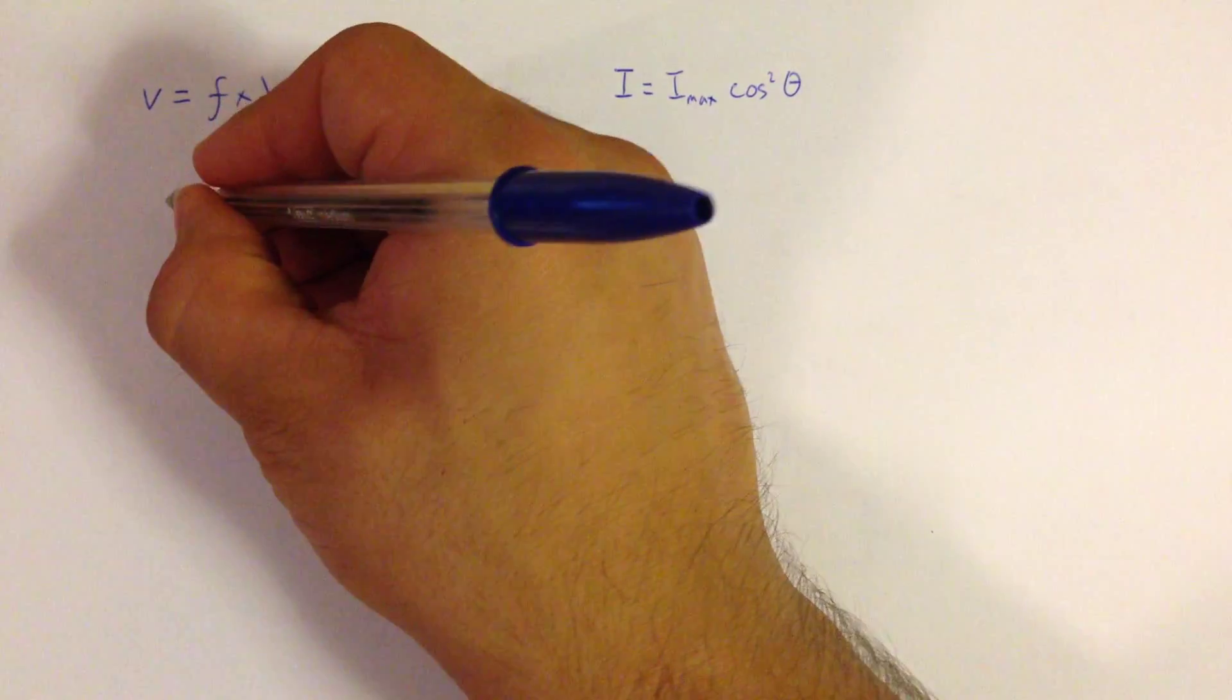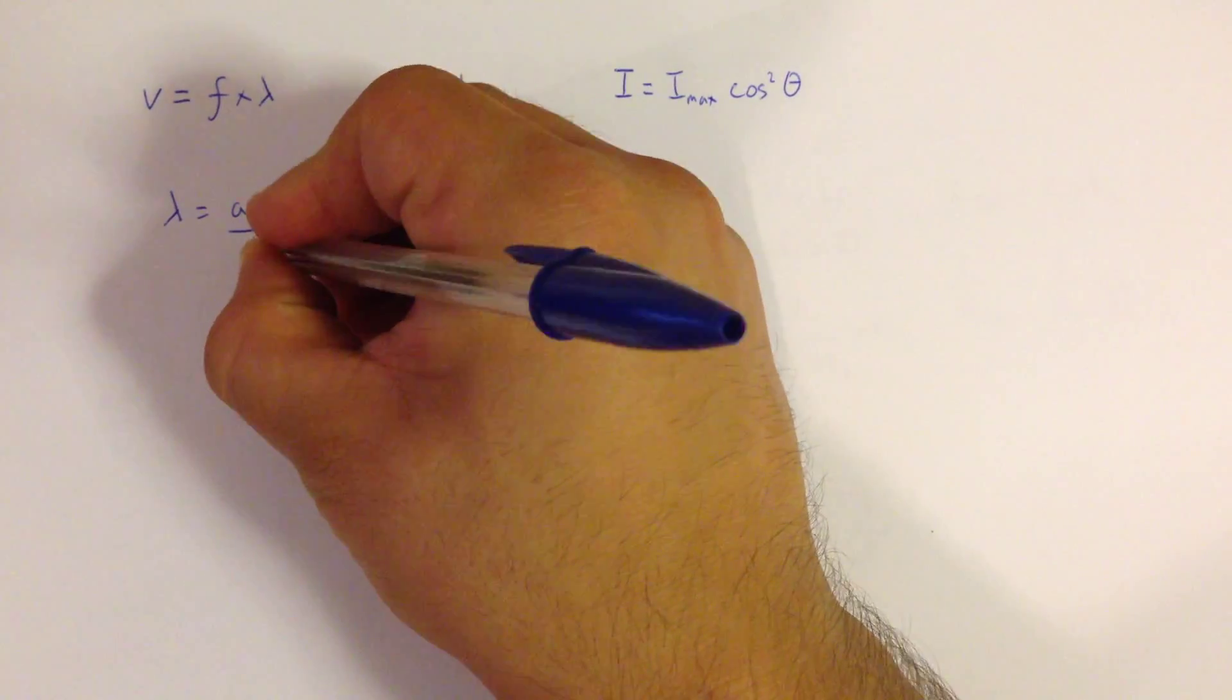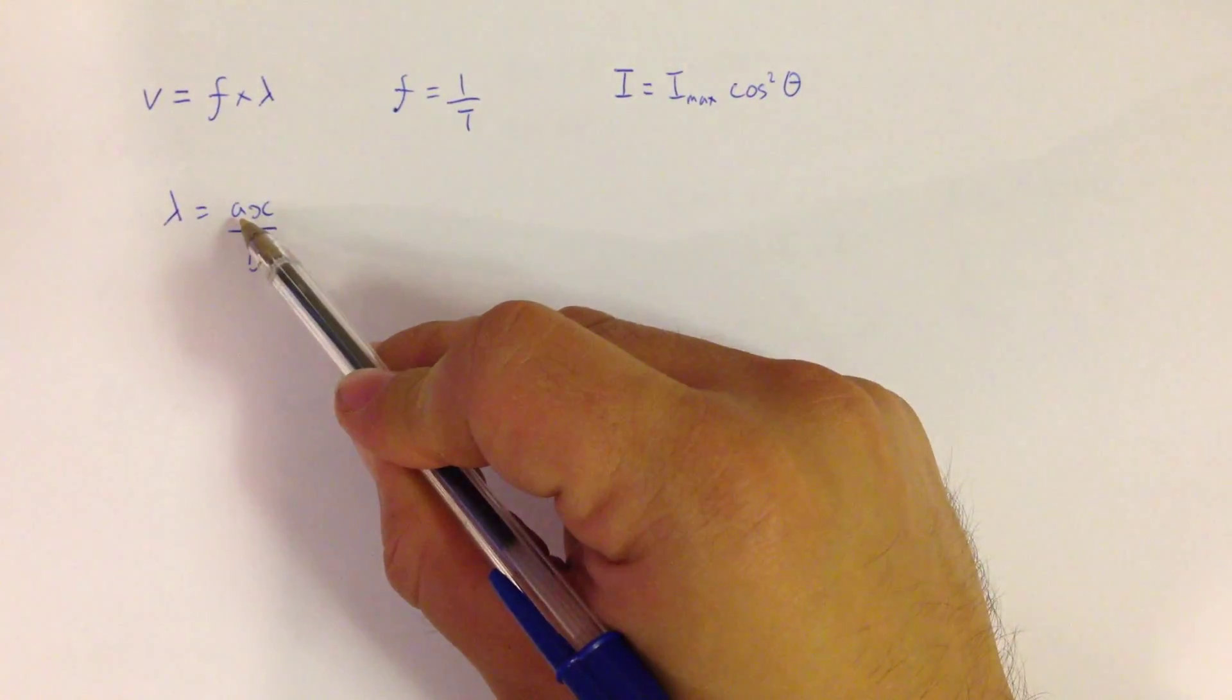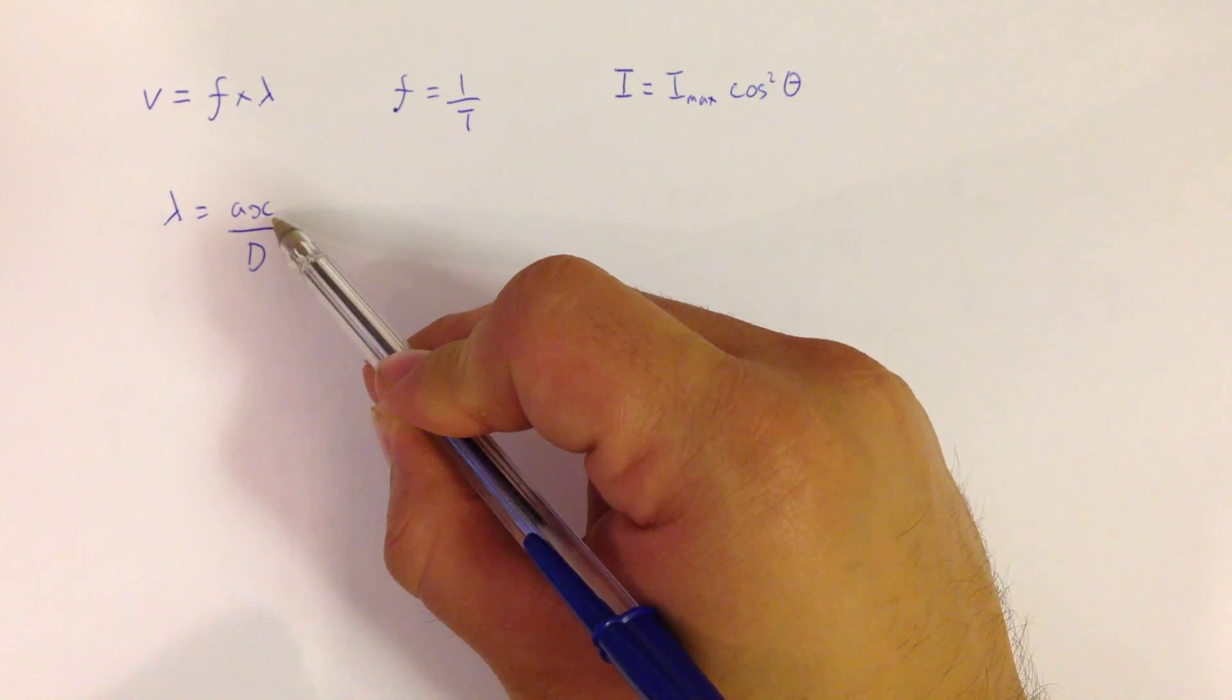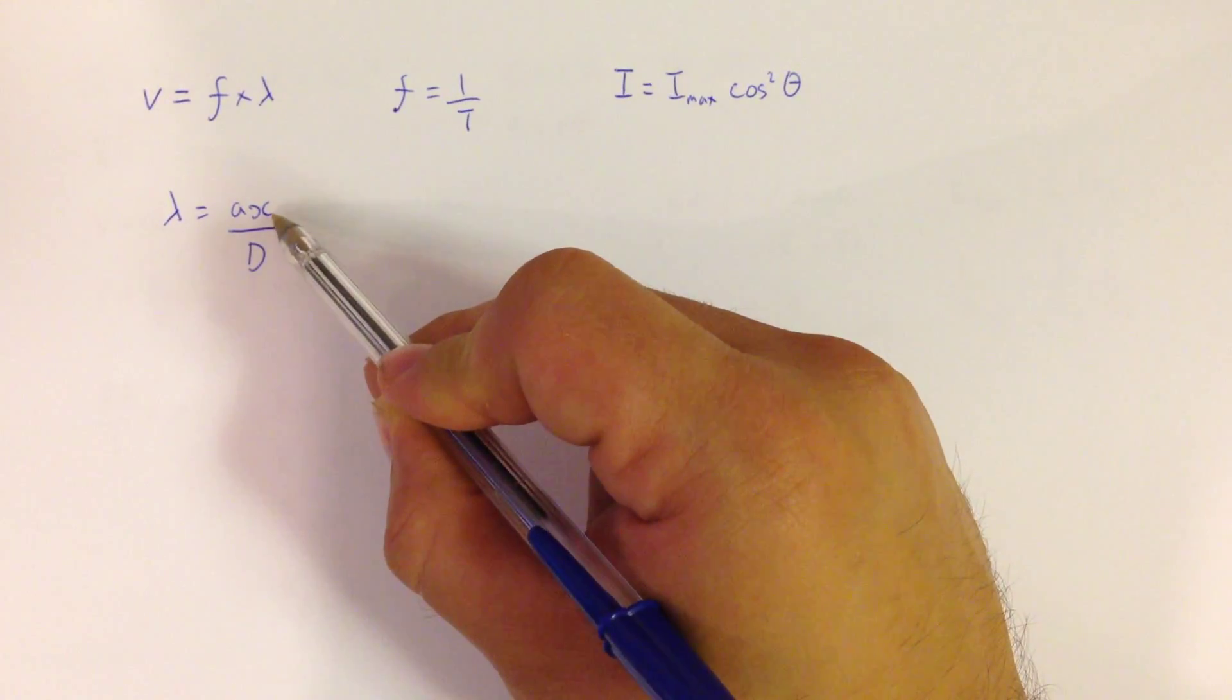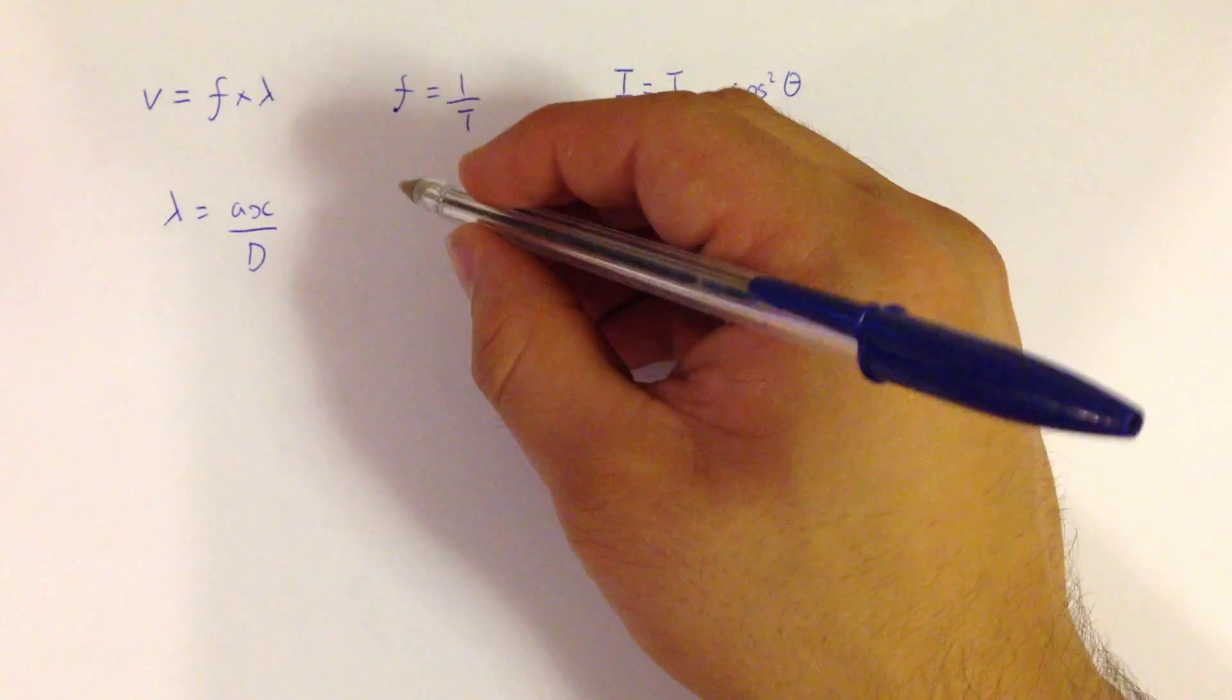We then get to Young's double slit experiment, which is that lambda is equal to A x over D, where A is where you start, so that is your slit separation. X is your fringe separation, remember X is where you end your journey, and D is the distance between the screen and the slits.